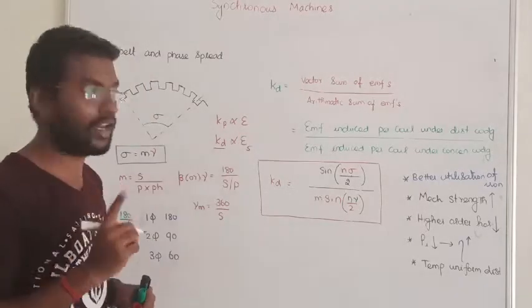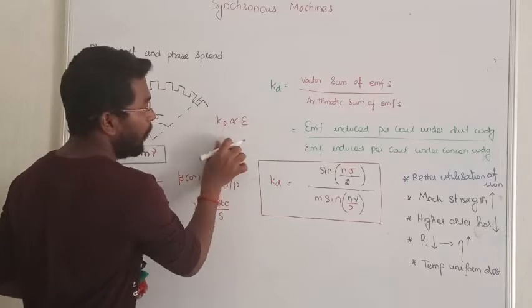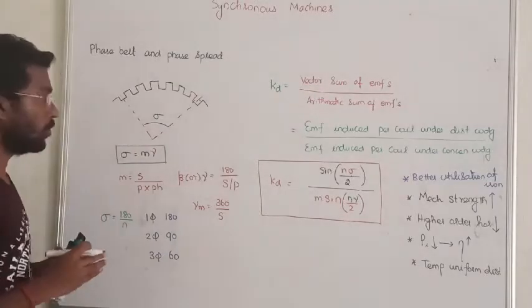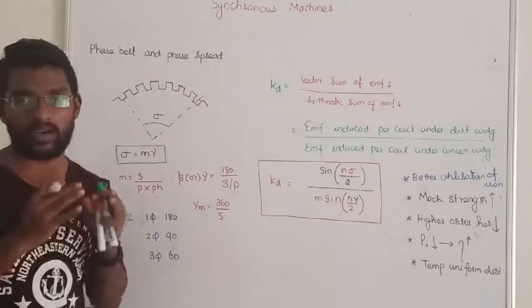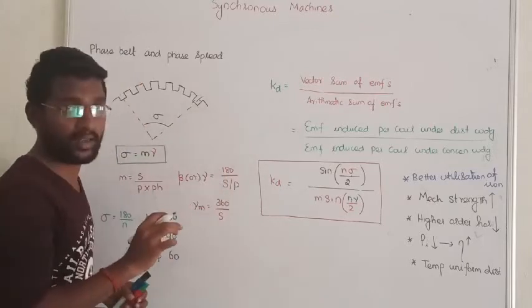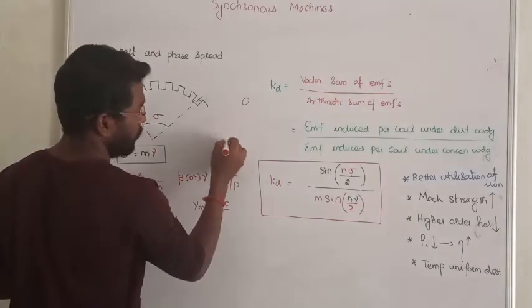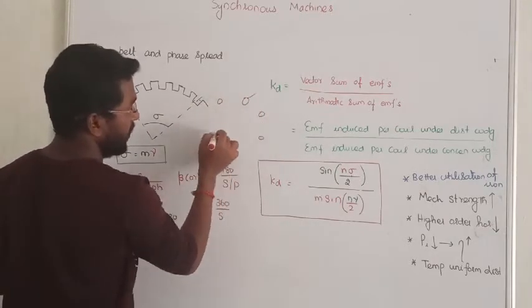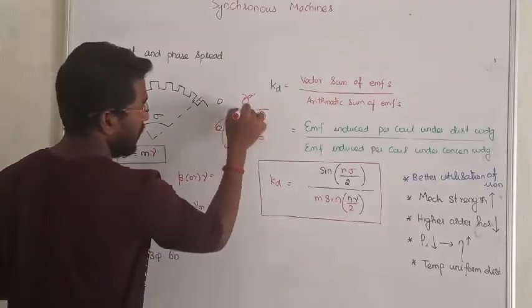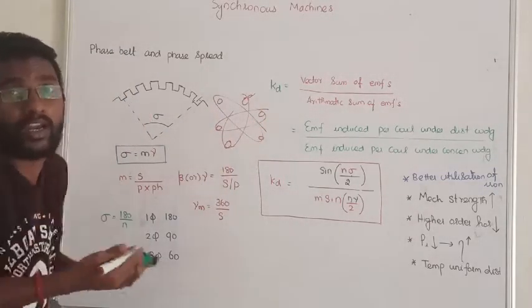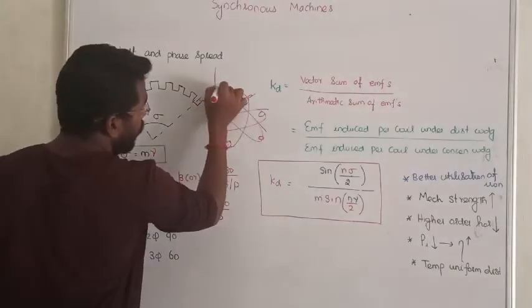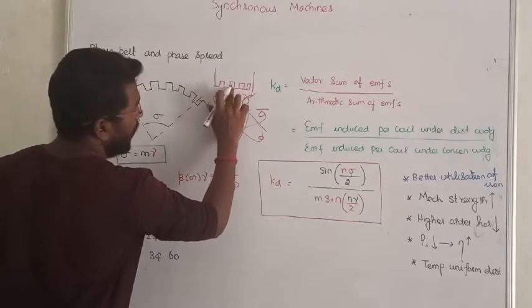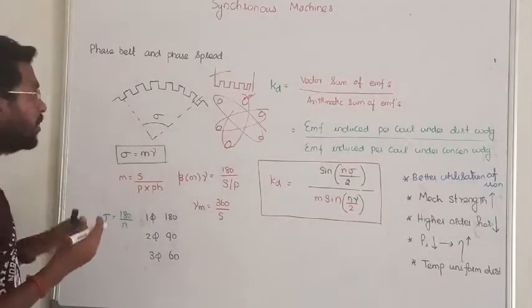What is the difference between concentrated winding and distributed winding? In concentrated winding, all conductors are placed in one slot per pole per phase. In distributed winding, you will have an end number of slots. So keeping conductors in end number of slots is called distribution.